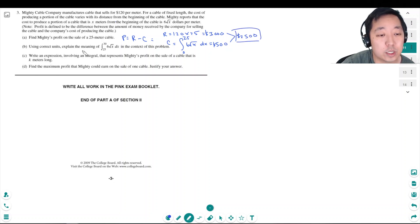Using correct units to explain the meaning of this in the context of the problem, for part B, it would be the added cost to go from 25 meter cable to 30 meters.